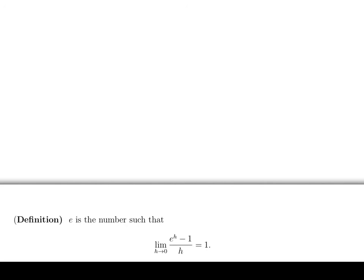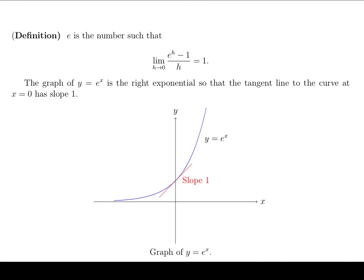Now again, we don't have any proof that this limit exists or that any such number exists. So we're going to take that on faith right now. Now we have a way of drawing this with a picture. Let's take a look at what the picture looks like. So it turns out that the graph of y equals e to the x is exactly the right exponential function so that the tangent line, the one that you see there in red, has slope 1. If you were to pick a different base for the exponential, like 2 to the x, or 3 to the x, or 10 to the x, you will not get a slope of exactly 1 at that point.